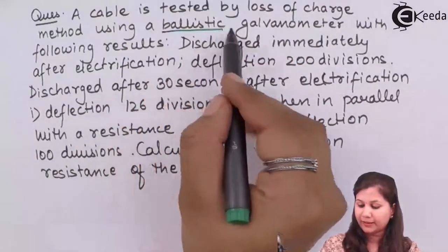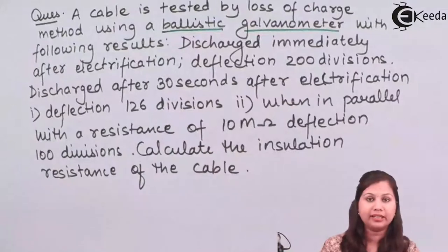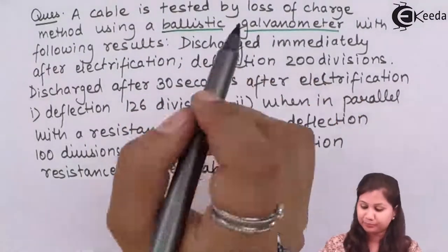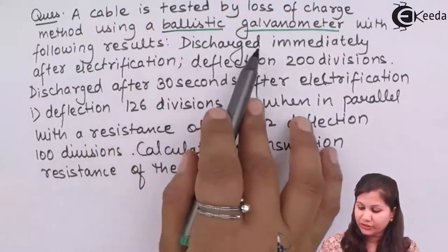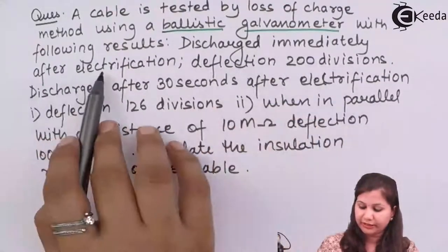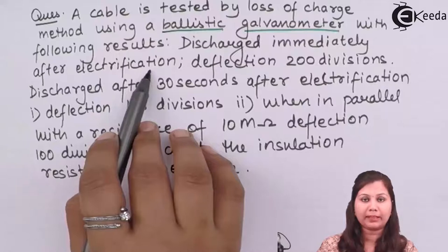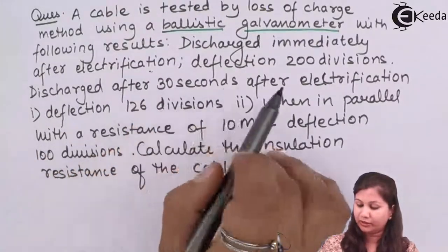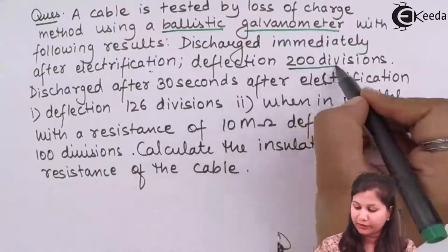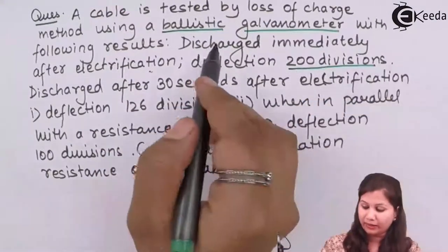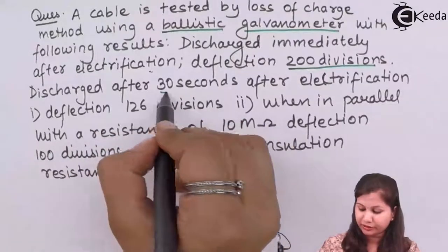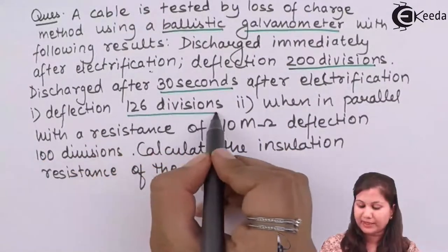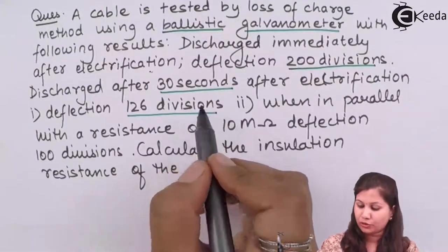The readings are indicated by the ballistic galvanometer. When the capacitor is discharged immediately after electrification, the deflection is 200 divisions. When the discharging is done after 30 seconds of electrification, the deflection is 126 divisions.